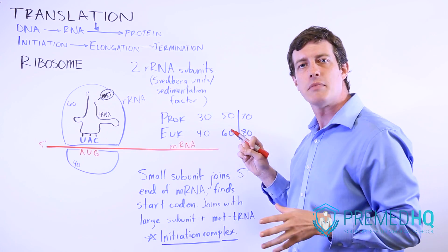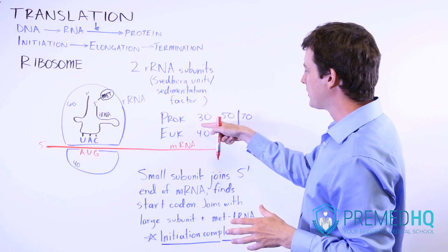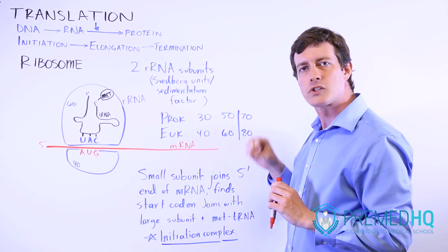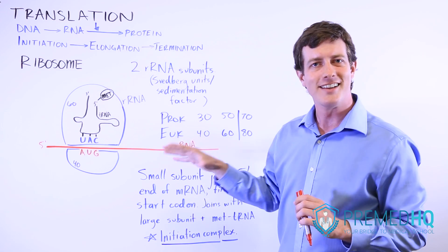They're distinctive for bacteria. So if you have a medication that targets something that is exactly this size, then you have something that will selectively go after the bacteria.